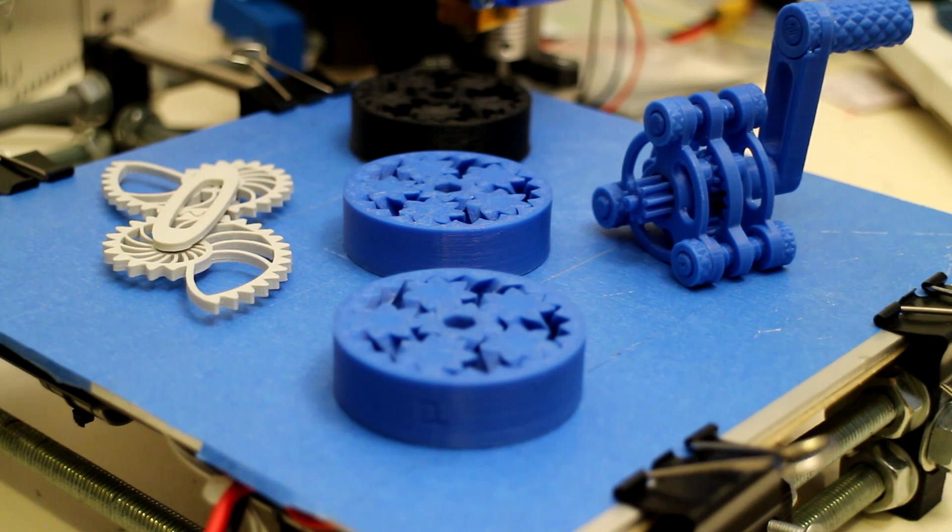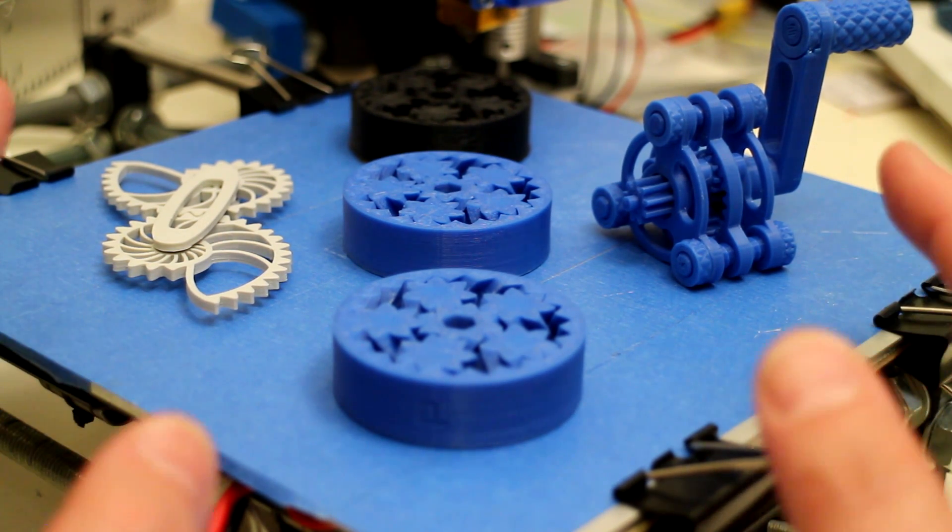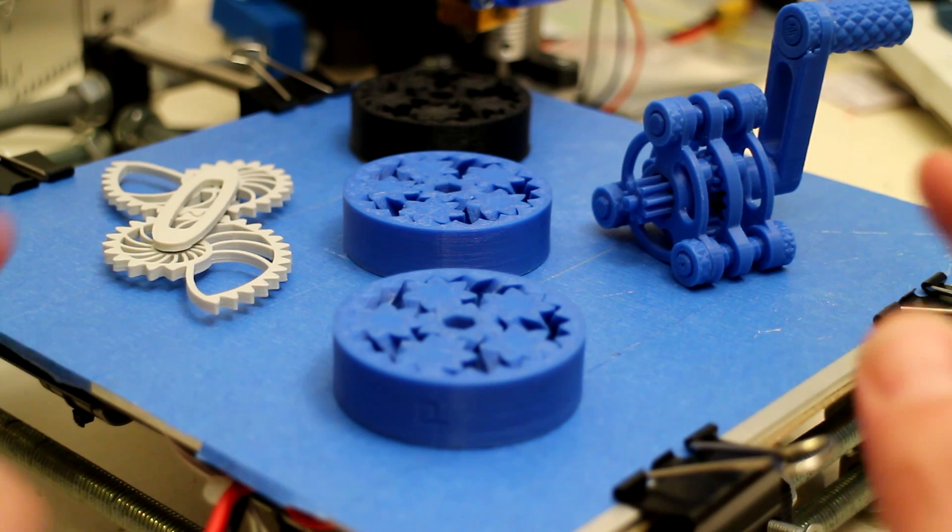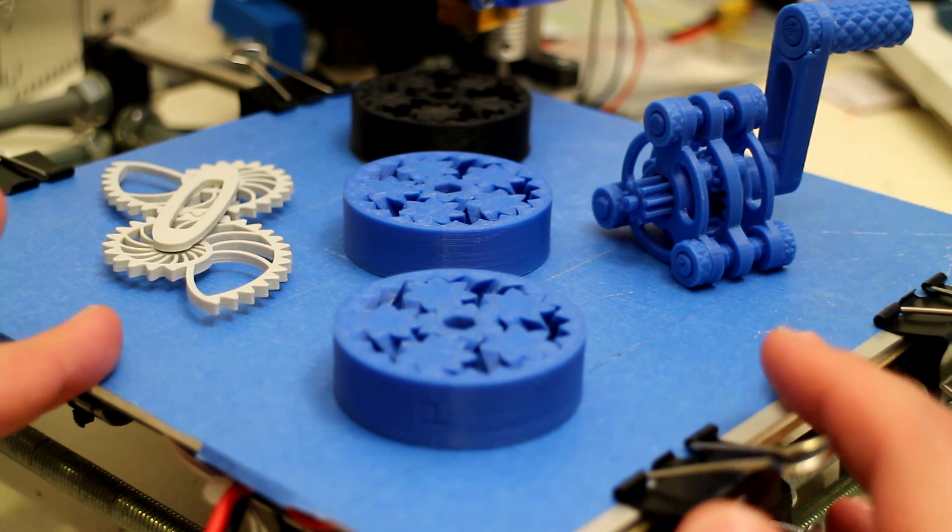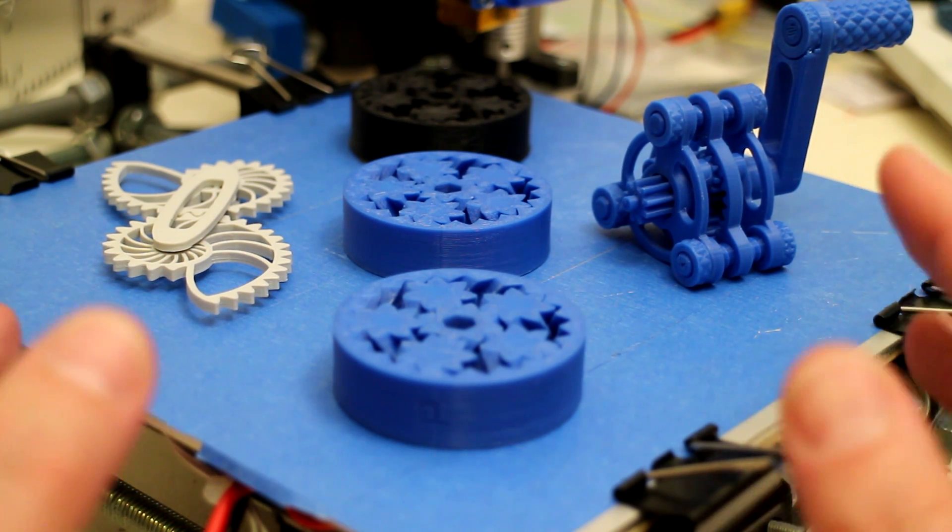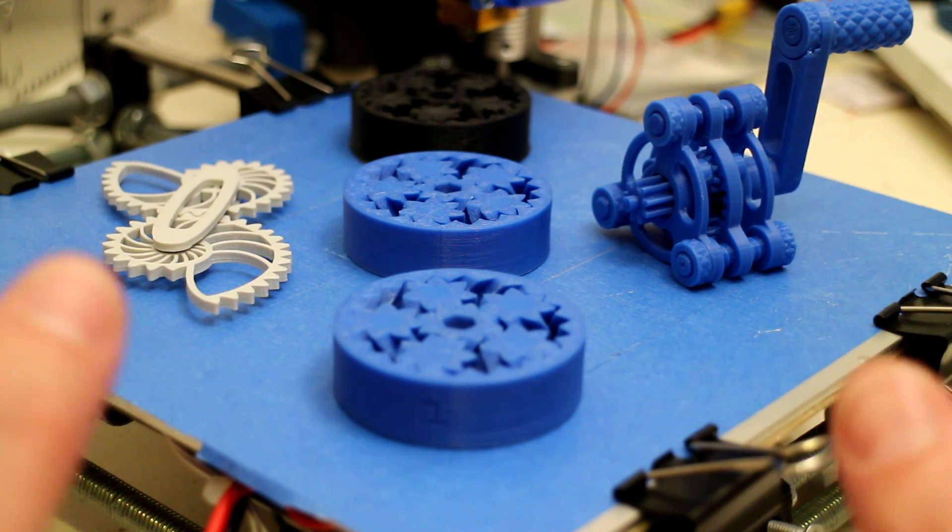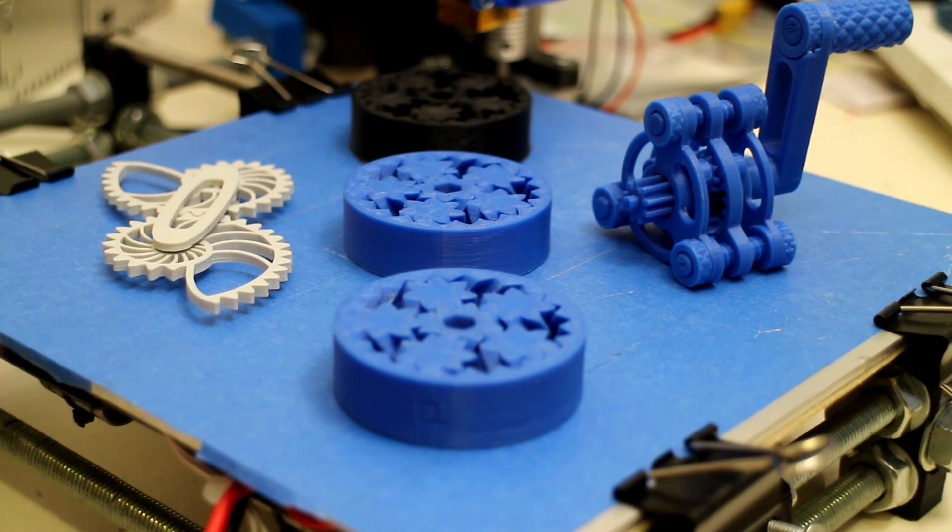Hey guys, since upgrading the 3D printer to the Bowden extruder and the E3D version 6 hotend, I've successfully been able to print what I think are complex prints. These are an assortment of gears that I've downloaded from Thingiverse, and with this setup they have all printed successfully. I'll go over them with you now.